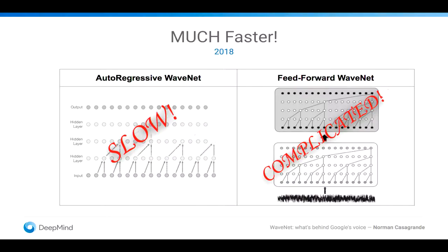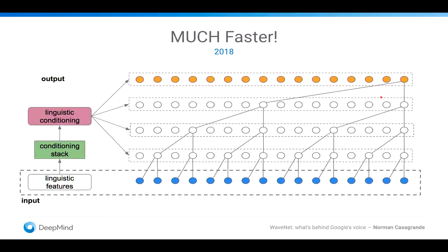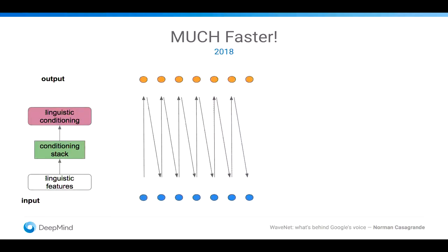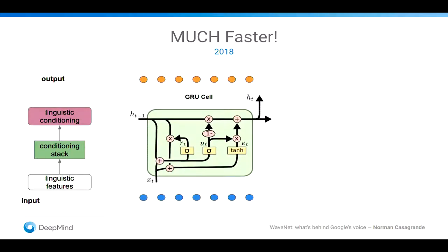So in 2018, we further advanced research. So you see, slow, complicated, and make it even faster. And so, remember, this was the original schema of WaveNet. Well, this part is gone. And it has been replaced by, well, instead of this bit, this bit, which is a GRU style.